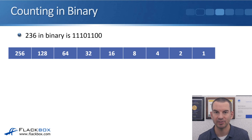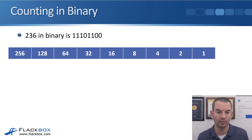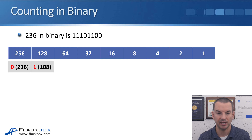You saw how to write down 236 in decimal. Now let's see how to write 236 in binary. The number we're going to get is 11101100. We do it the same way — it's either on or off, 1 or 0. Starting with 256: does 256 fit into 236? No, it doesn't — 236 is smaller than 256, so we put a 0 and still have 236 left. Does 128 fit into 236? Yes, so that's a 1, and we've got 108 left over.